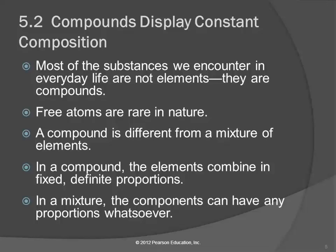We talked about compounds being different from mixtures. Mixtures have a varying composition — you can have a lot of sugar in your tea or a little sugar in your tea. Whereas a compound has a fixed composition; it always has the same ratio of components. Most things we encounter are not elements — very few elements exist as uncombined elements. Most are compounds, and in those compounds the ratios of the elements are going to be specific, definite, and the same every time. In a mixture, the components can vary.